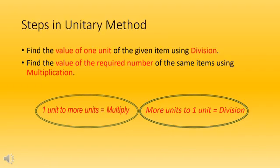Now we will know some steps of Unitary Method. Step 1: find the value of one unit of the given item using division. Step 2: find the value of the required number of the same items using multiplication. Or we can say: 1 unit to more units equals multiply, and more units to 1 unit equals division.